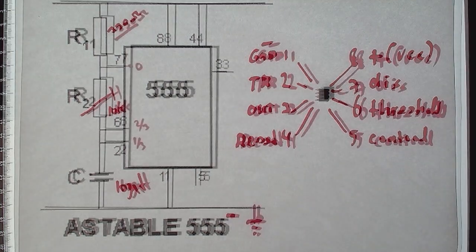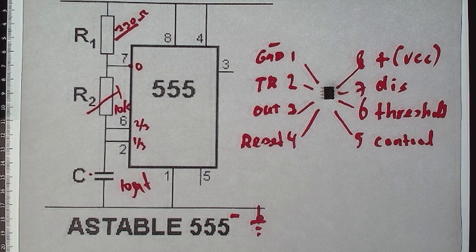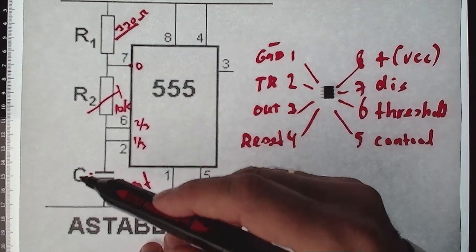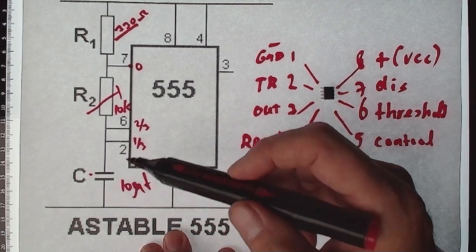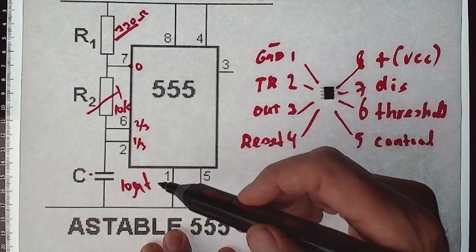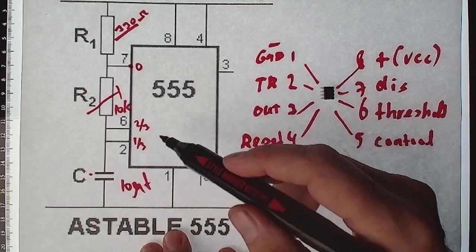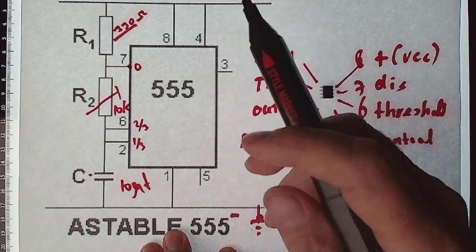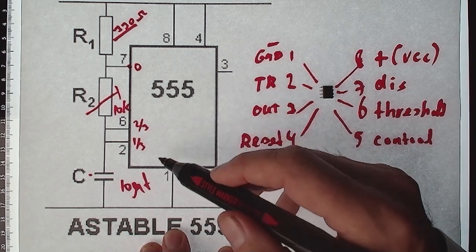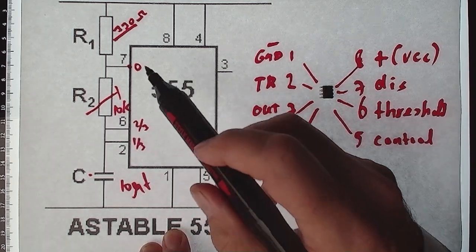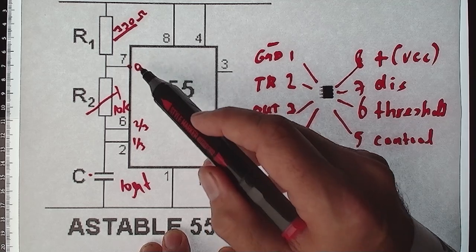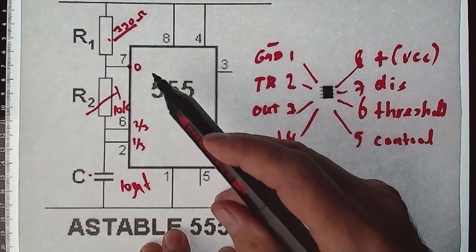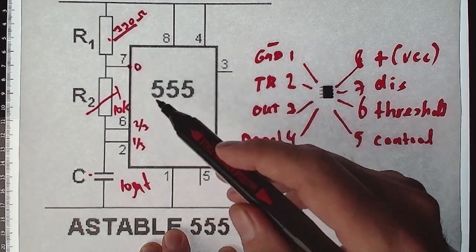So now I'm going to try to explain what happens, how it works. The capacitor charges via these two resistors to approximately two-thirds of its power supply voltage - in this case five or fifteen volts. When that happens, pin six detects that and shorts pin seven to the ground, zero volts, protected by this resistor so it doesn't damage it.